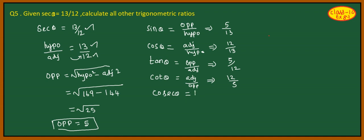Then, cosecant theta formula: hypotenuse by opposite side. So, hypotenuse is 13 and opposite value is 5. Therefore, cosecant theta equals 13 by 5. This is your answer. Thank you, students.